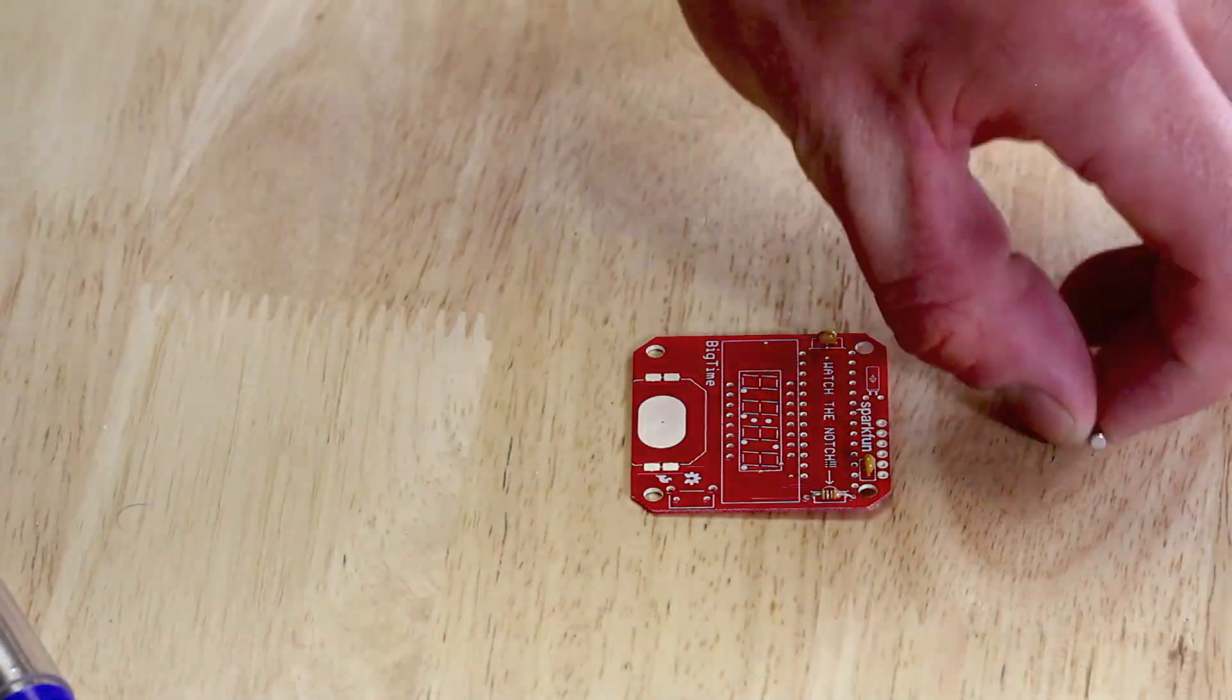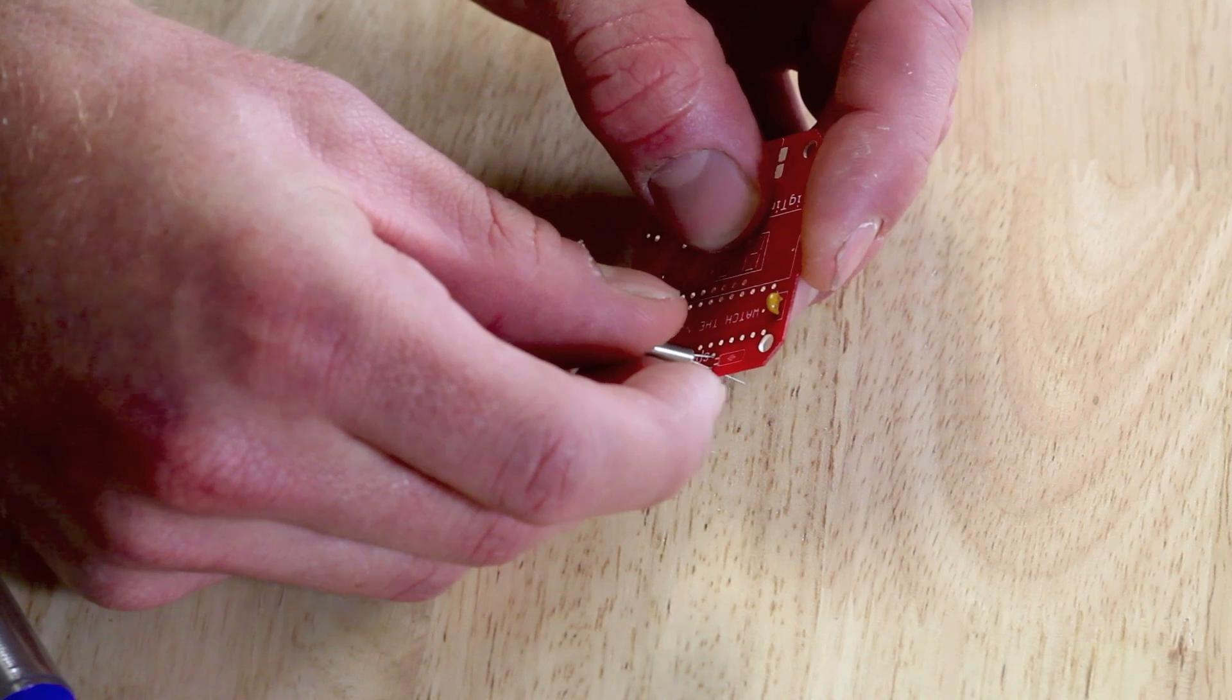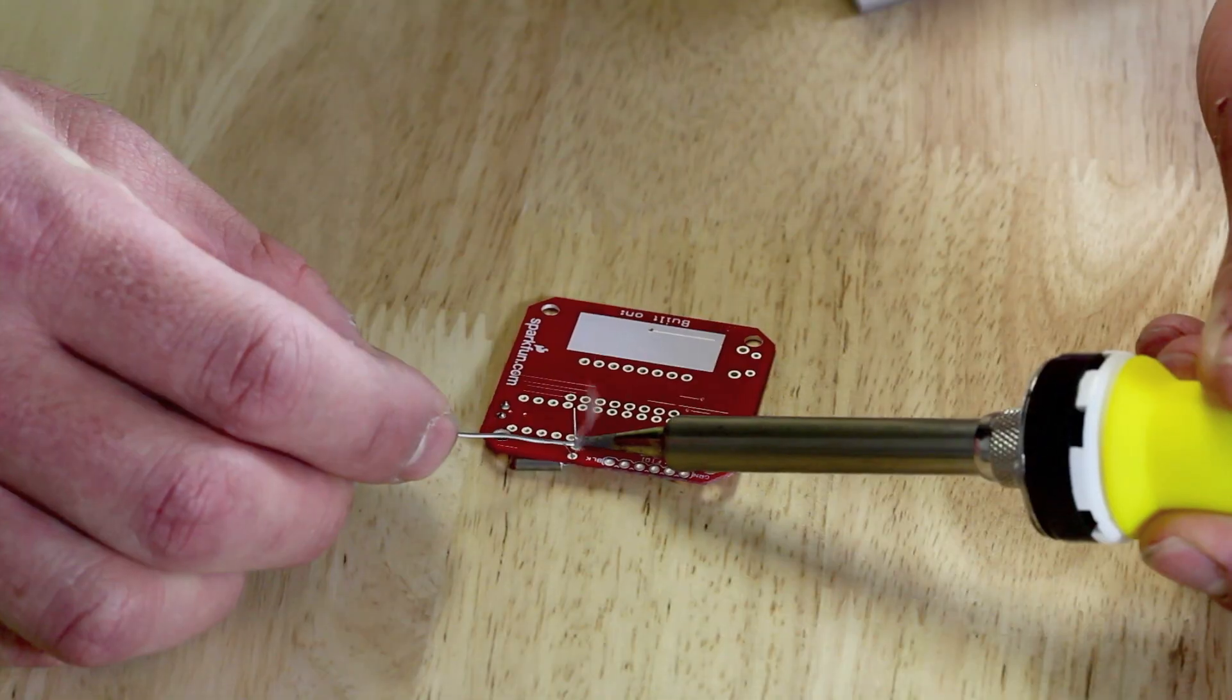Next up is the crystal. That's this little guy right here. This guy's a little bit tricky because he stands up so tall, and remember we're trying to get this in a flush package into a watch. So what we have to do is put him into place here, and before you stick him down all the way, bend him over so he sits flush with the board. Feel free to solder him in as well.